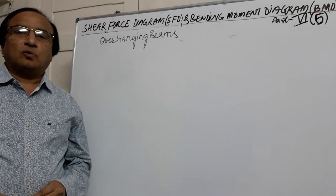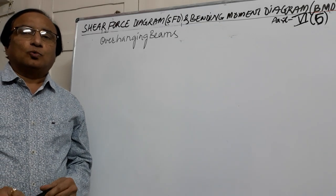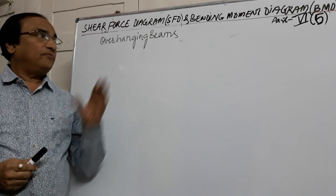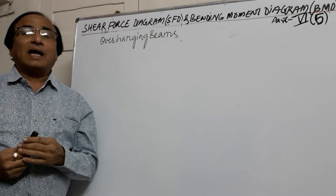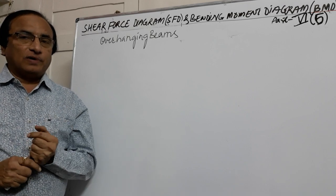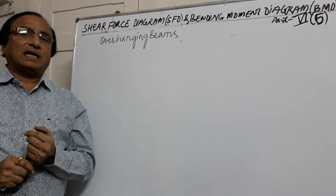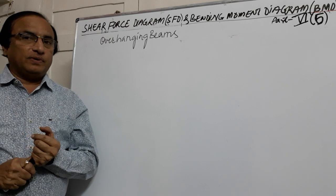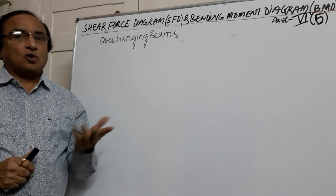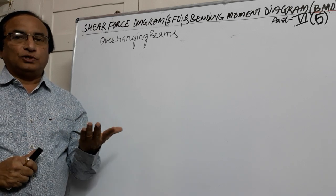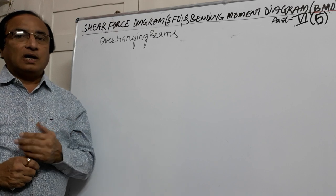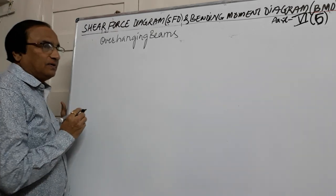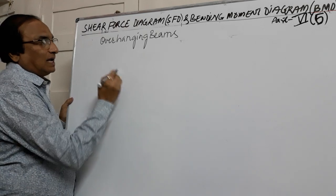Hello friends, my name is BK Kolabare. Today we will see how to draw the shear force diagram and bending moment diagram for an overhanging beam. In earlier videos we have seen how to find the shear force diagram and bending moment diagram for simply supported beams with different load combinations: concentrated load, UDL load, UVL load, and moment. So today we will see how to draw SFD and BMD for an overhanging beam.